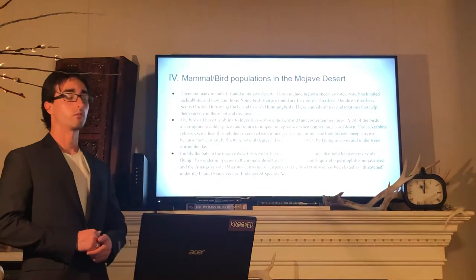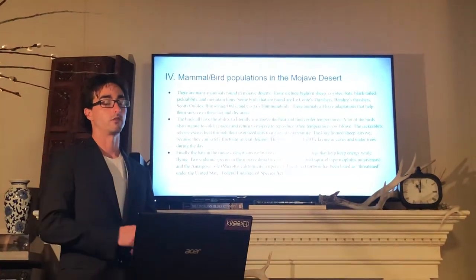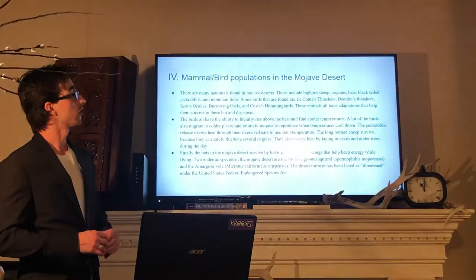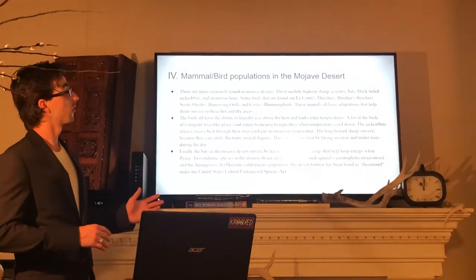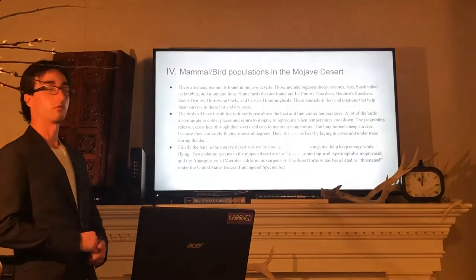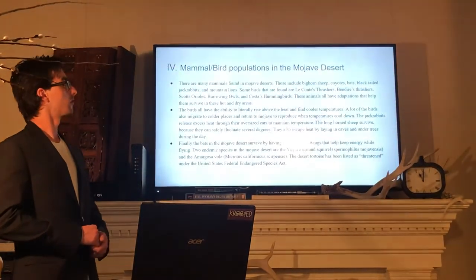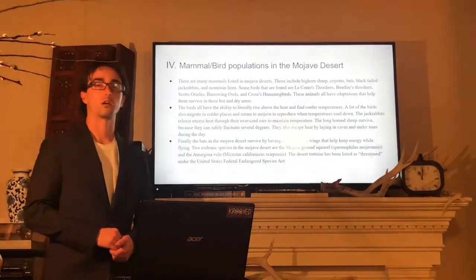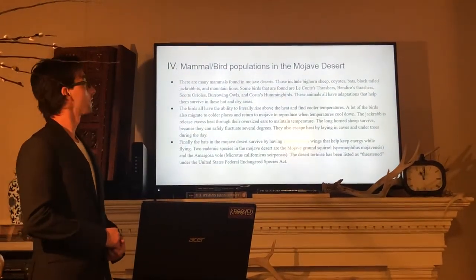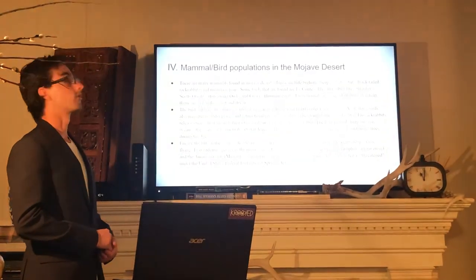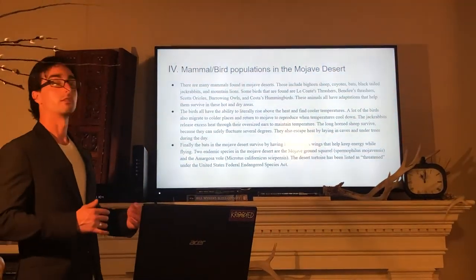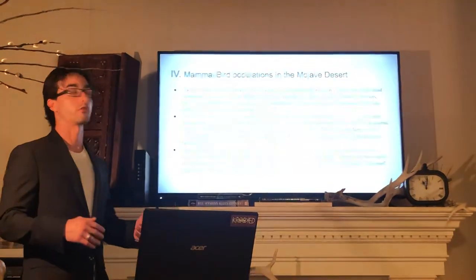The mammal and bird populations in the Mojave Desert are diverse. Mammals found in the Mojave include bighorn sheep, coyotes, bats, black-tailed jackrabbits, and mountain lions. Some birds found there are LeConte's thrashers, Bendire's thrashers, Scott's orioles, burrowing owls, and Costa's hummingbirds. These animals all have adaptations that help them survive in these hot and dry areas.